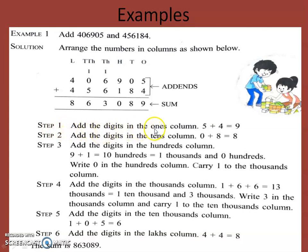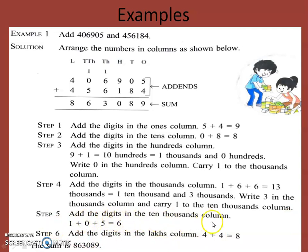Here are the steps. Step one: add the digits in the ones column — five plus four equals nine. Step two: add the tens digits — zero plus eight equals eight. Step three: add the hundreds — nine plus one equals ten, which is one thousand and zero hundreds, so write zero in the hundreds column and carry one to the thousands column. Step four: add the thousands — one plus six plus six equals thirteen thousands, so write three in the thousands column and carry one. Step five: add the ten thousands — one plus zero plus five equals six. Step six: add the lakhs — four plus four equals eight. The answer is eight lakh sixty three thousand and eighty nine.